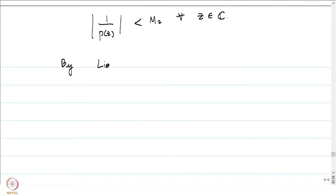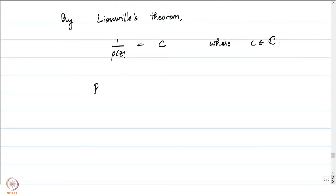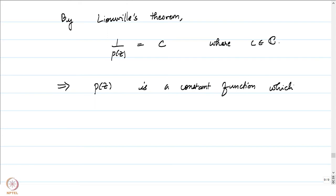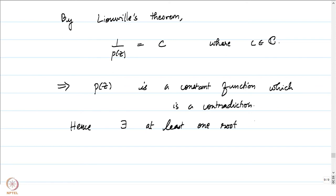By Liouville's theorem, bounded entire functions cannot be non-constant. Here 1/P(z) is an entire function which is bounded, so by Liouville's theorem 1/P(z) is constant, which would mean P(z) is constant. But that is a contradiction because P(z) is a polynomial of degree n ≥ 1, while constant functions have degree 0. Hence our assumption was false, and there exists at least one root zₙ ∈ ℂ such that P(zₙ) = 0.